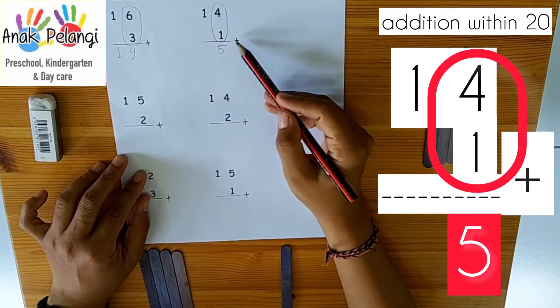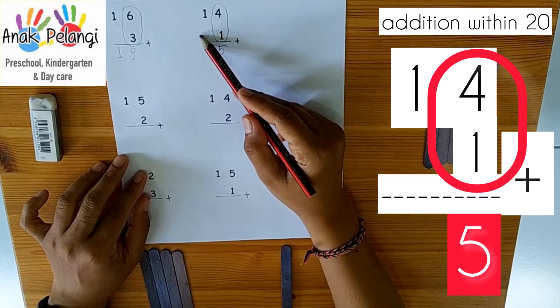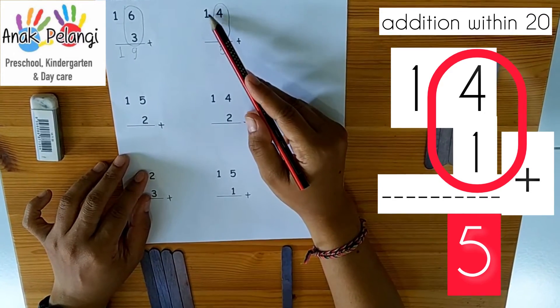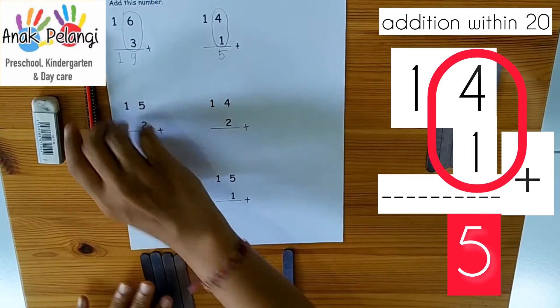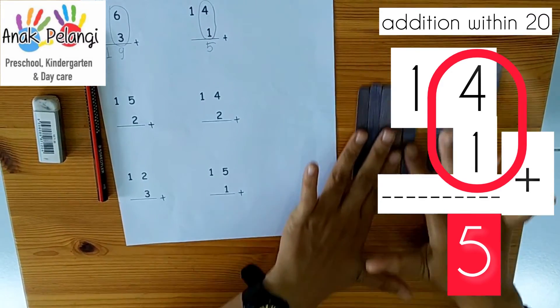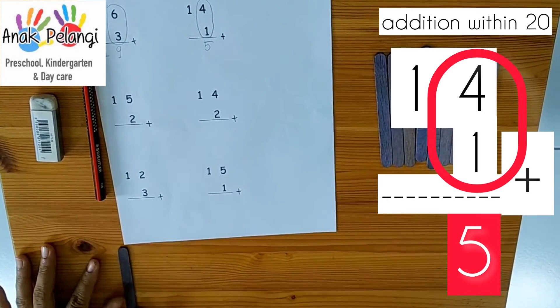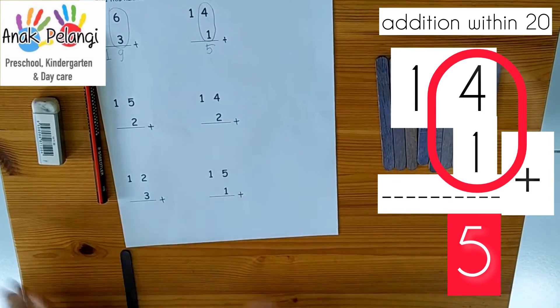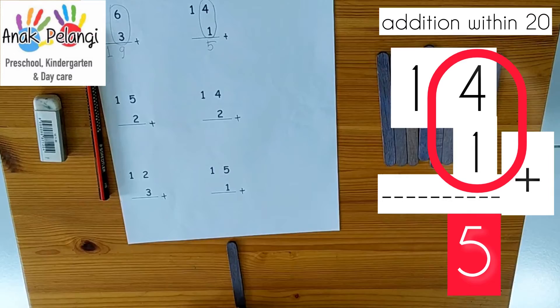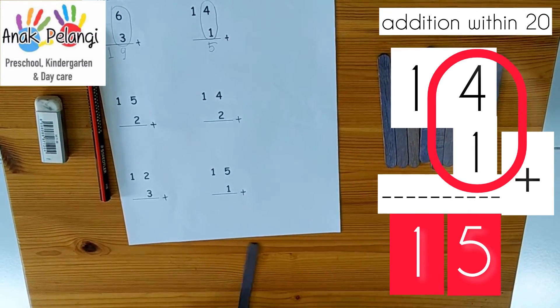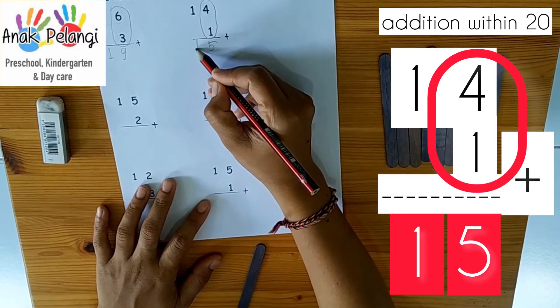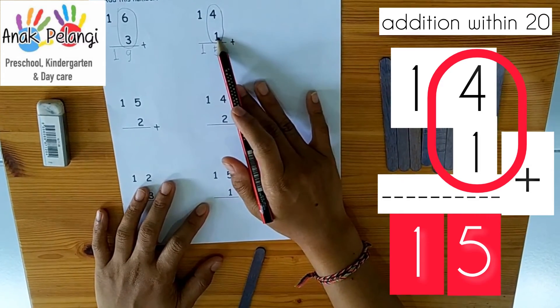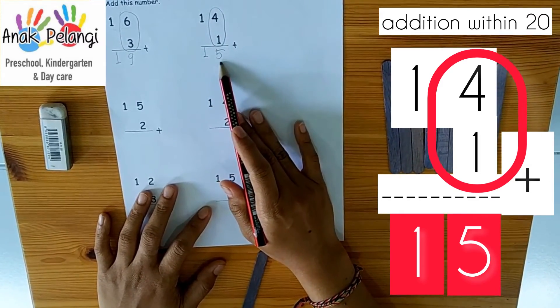1 plus 0. Remember, when there is no number here, it means it is 0. 1 plus 0 means nothing. 1 plus 0 is equal to 1. So we have got the results. 14 plus 1 is equal to 15.